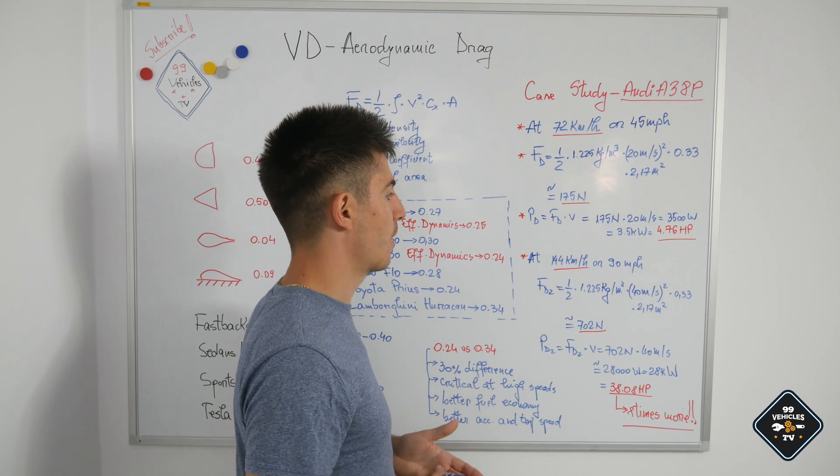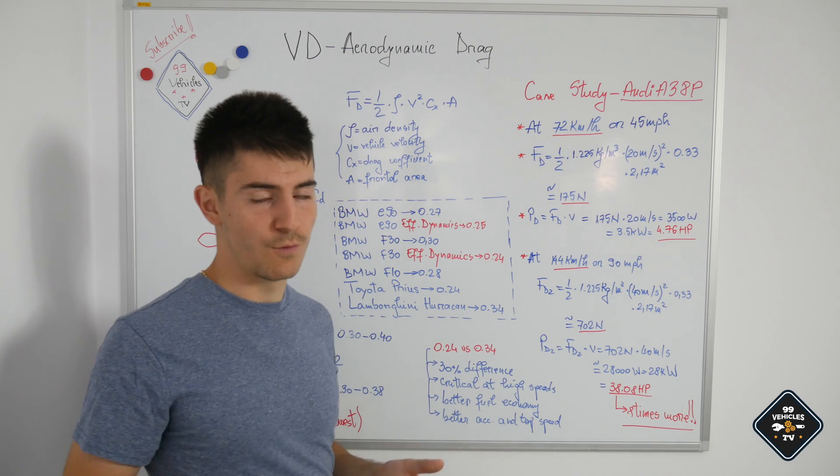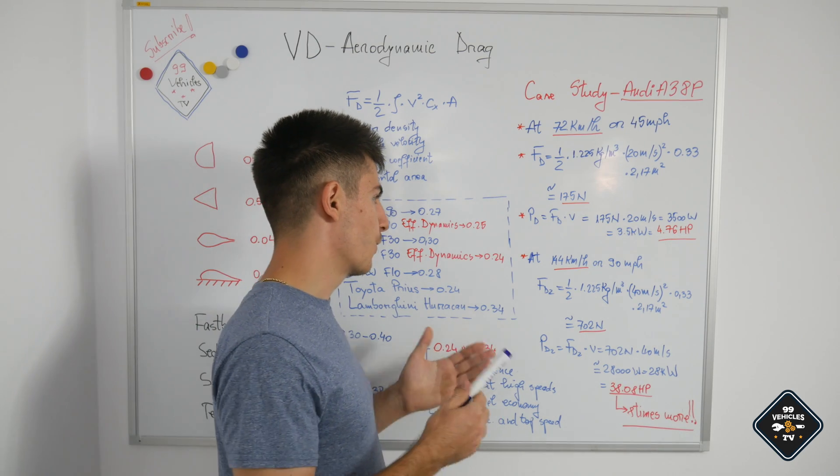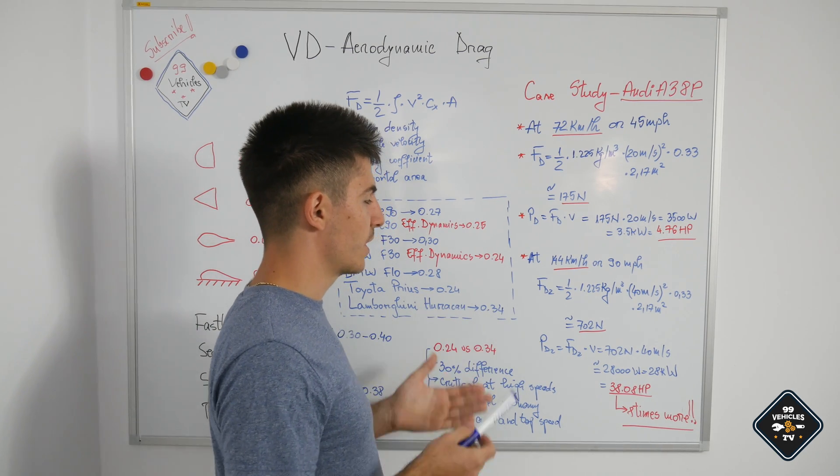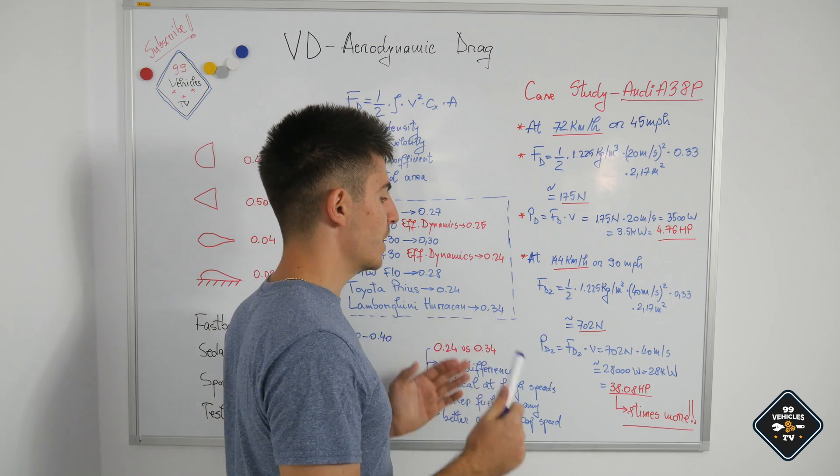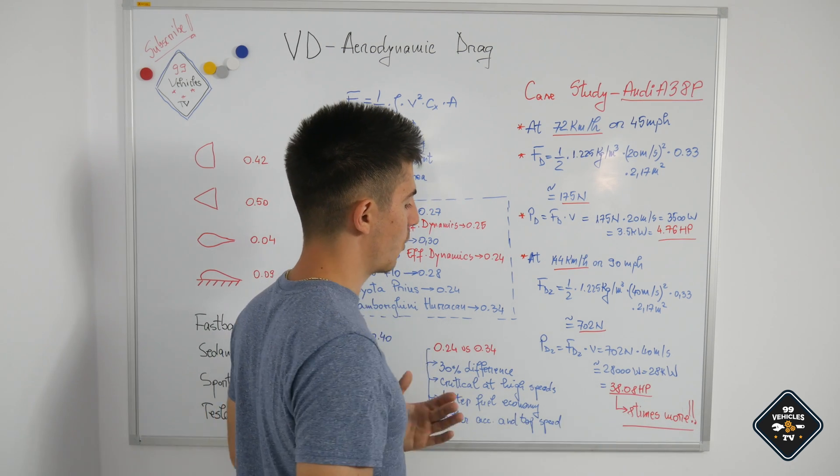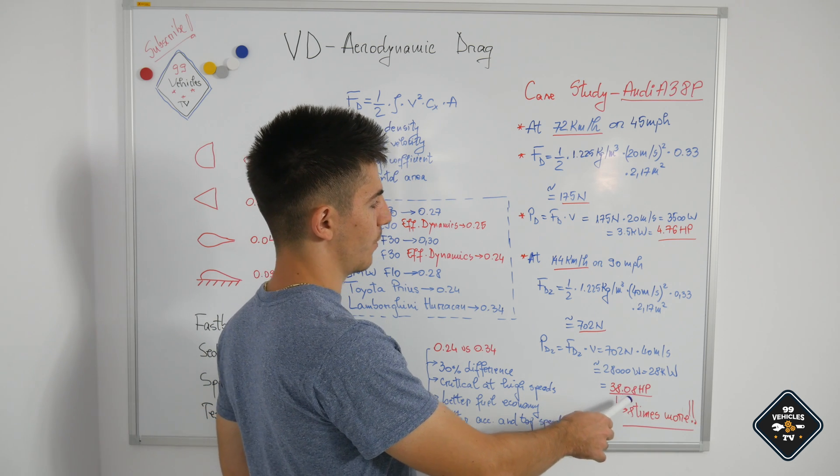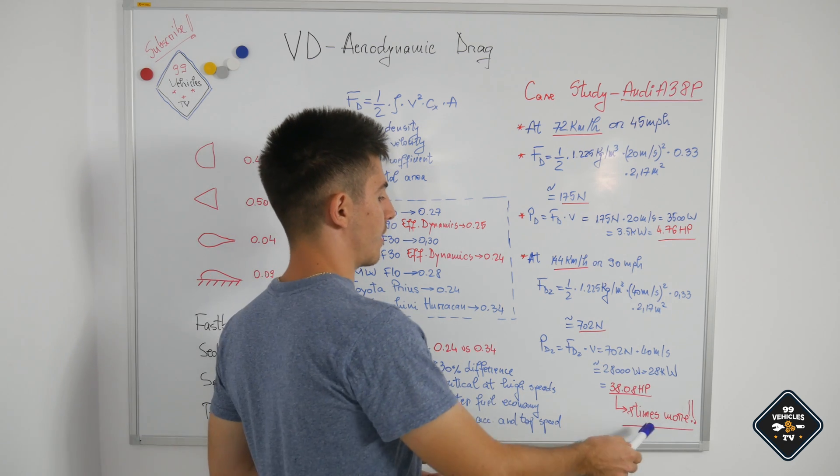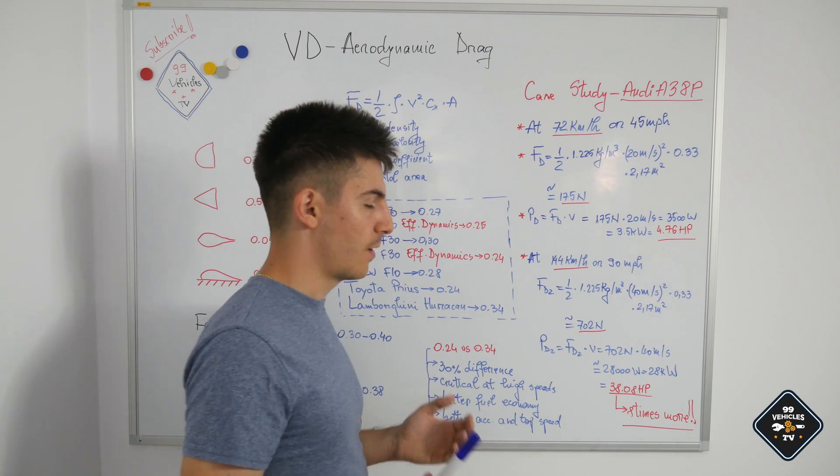Now don't think that if you double the speed from 72 kilometers per hour to 144, you will need just the double amount of power to overcome the aerodynamic drag forces. The power required to overcome those forces exponentially increases. So at 144 kilometers per hour or 90 miles per hour, we need exactly 28 kilowatts or 38.08 horsepower. If you divide 38.08 by 4.76 horsepower, it's exactly eight times more. So two times the speed, eight times more power required.